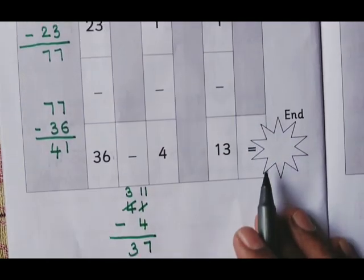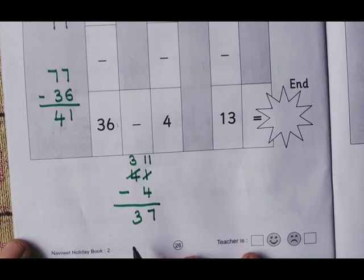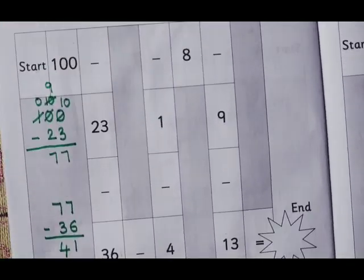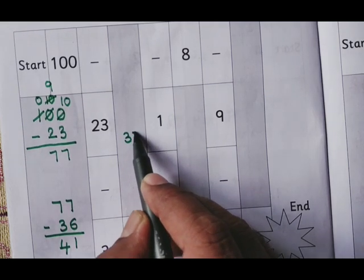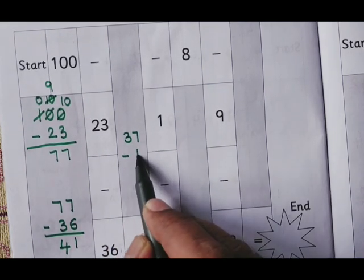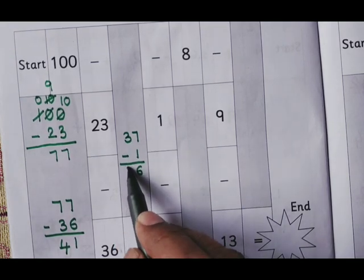This arrow should move upward. Now 37. 37 minus 1 we have to do. 37 minus 1. 7 minus 1 is 6. Then here 36.